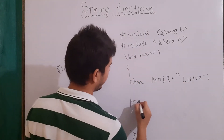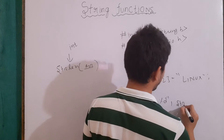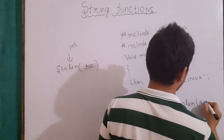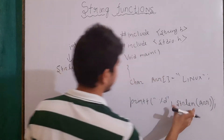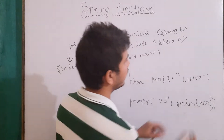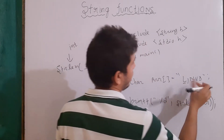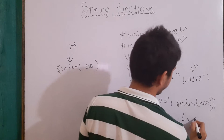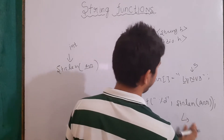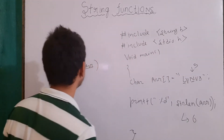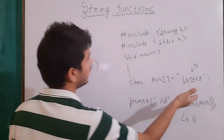So if we write here printf("%d", strlen(arr)) — arr being the name of our array — this is how we use the strlen function. The output here will be 5, because L-I-N-U-X has 5 characters. If I add another character, the length will become 6. The simple use of strlen is to tell us the length of our string.